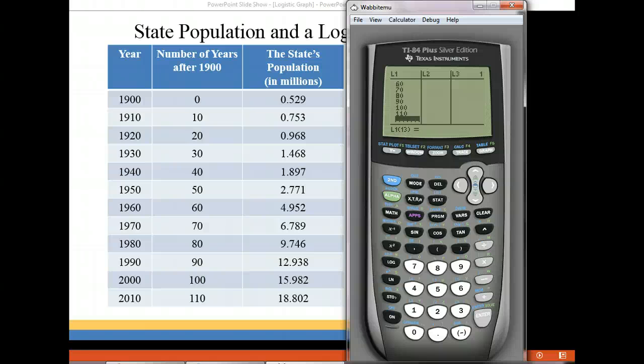Now we're going to go over to L2 and enter the population. So I'm just going to use my arrow key here to go over to the next column, and it should bring you right to the top of that column. We're going to start entering the population in millions. So for 1900 you have 0.529, for 1910 you have 0.753. You can do the same thing we did for L1. Go ahead and pause the video and come back when you're done and we'll calculate the logistic equation. I finished entering the data in L1 and L2.